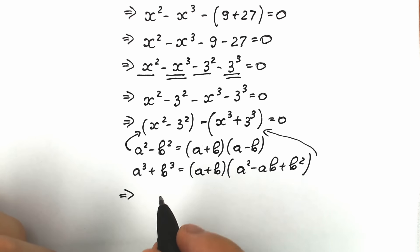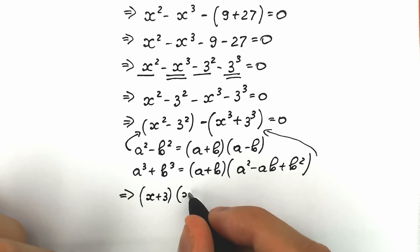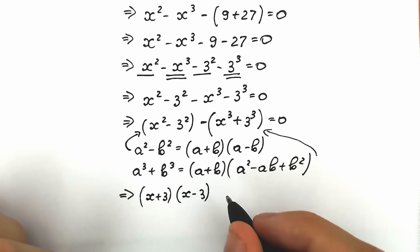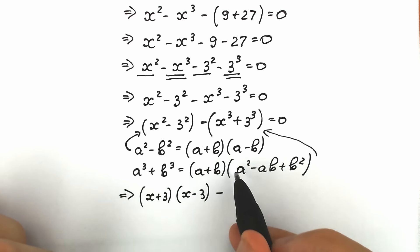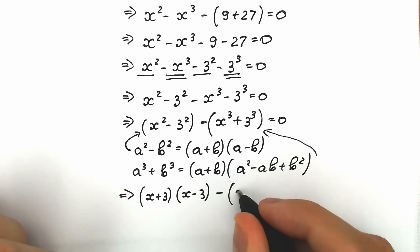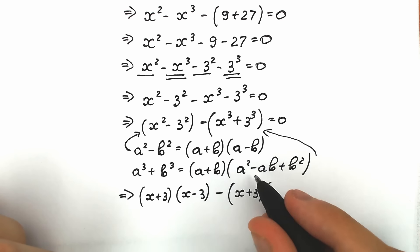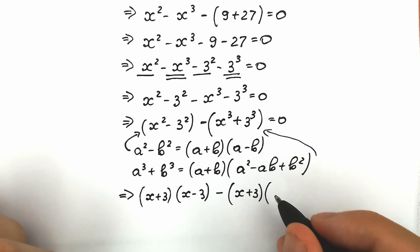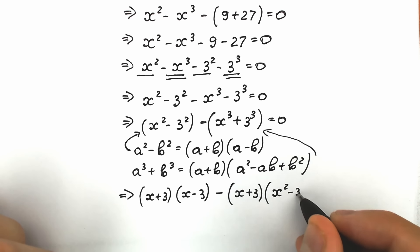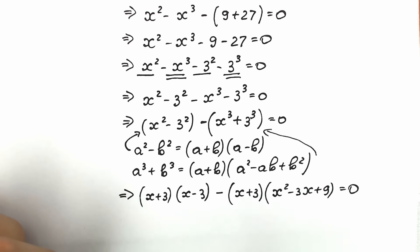Now we can apply these formulas. Applying the difference of squares to the first parentheses gives us x plus 3 times x minus 3. Applying the sum of cubes formula to the second parentheses gives us x plus 3 times x squared minus 3x plus 9. So we have: x plus 3 times x minus 3, minus x plus 3 times x squared minus 3x plus 9, equal to 0.